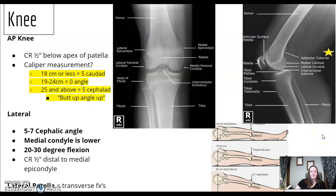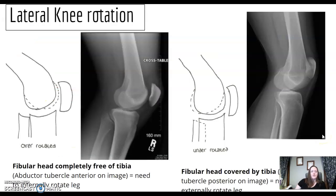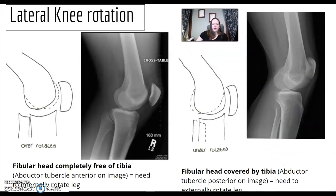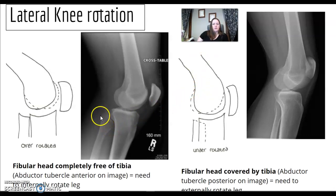For lateral knee rotation — can you tell when you're over-rotated or under-rotated by looking at the image? The key is the relationship of the fibula to the tibia.